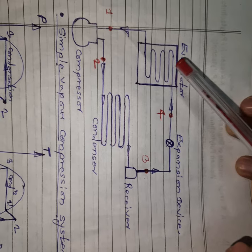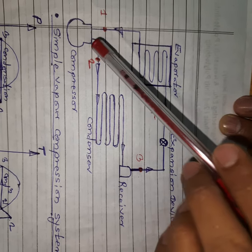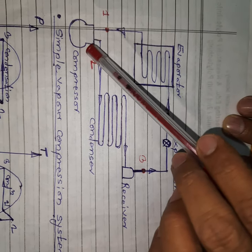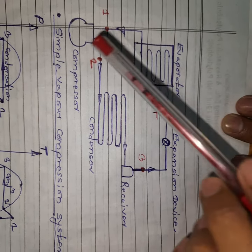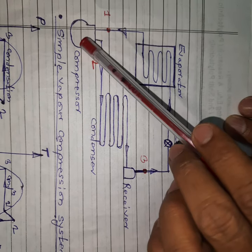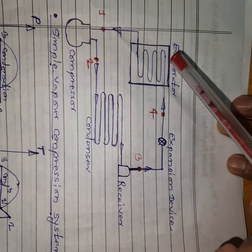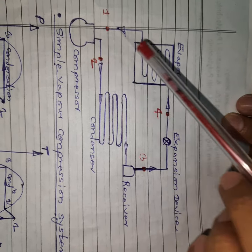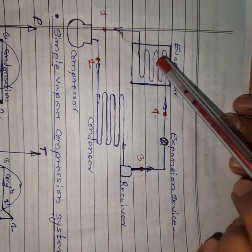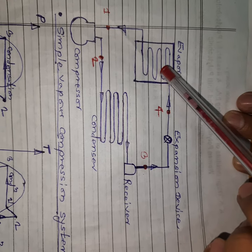Output we get from the evaporator and input we supply to the compressor. Output is refrigerating effect; input is work supplied. Output upon input — that is RE upon W — is known as the coefficient of performance of the refrigeration system.